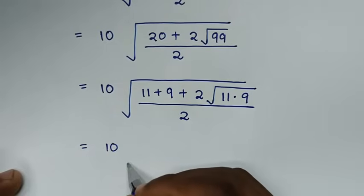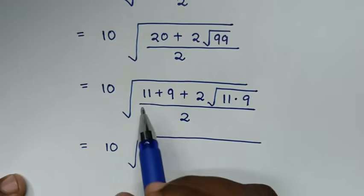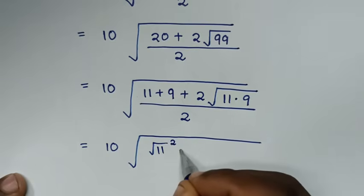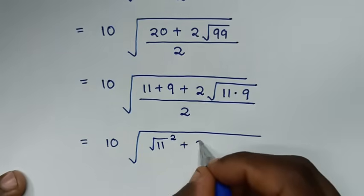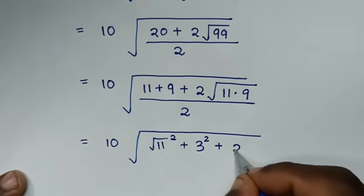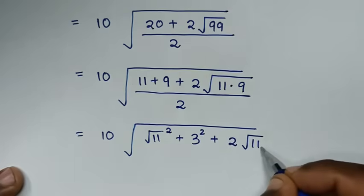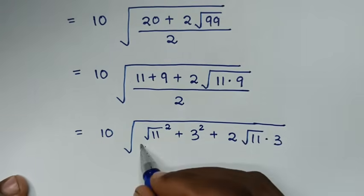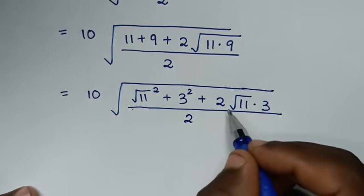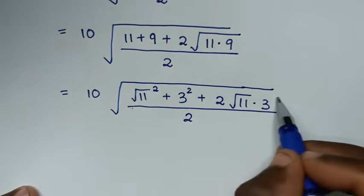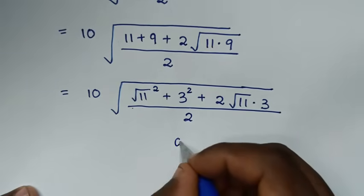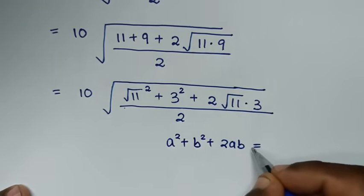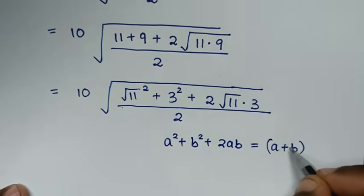We now have 10 times the square root of: (square root of 11) squared plus 3 squared plus 2 times square root of 11 times 3, over 2. The expression in the numerator under the radical is in the form a squared plus 2ab plus b squared, which equals (a plus b) squared.